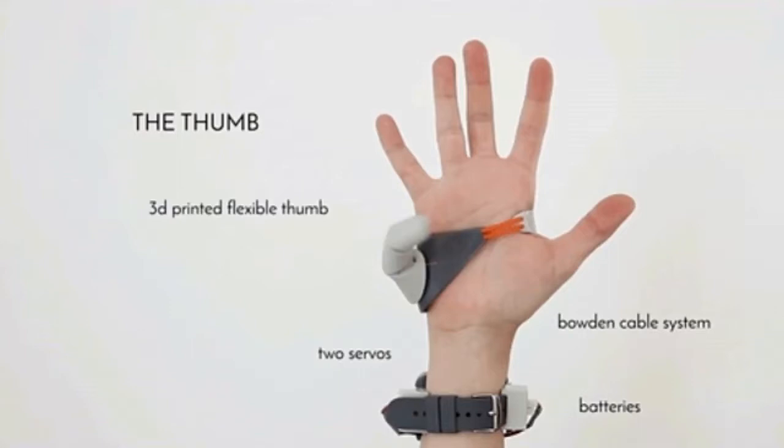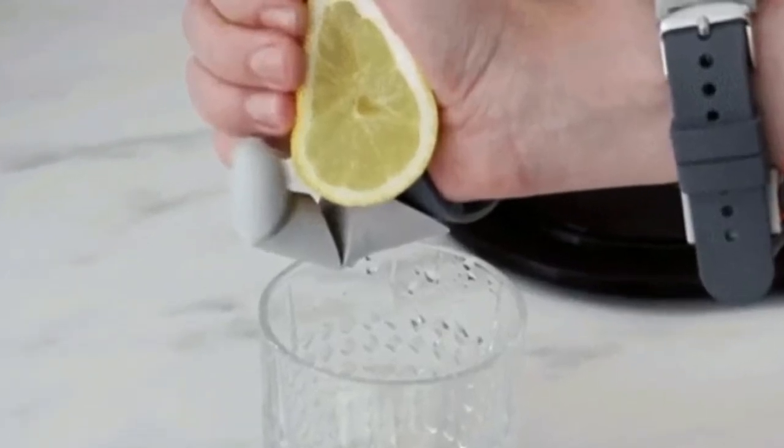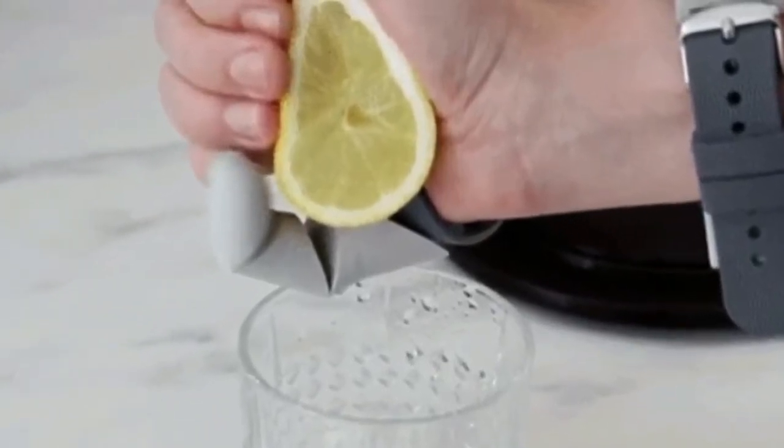The origin of the word prosthesis meant to add, put on to, so not to fix or replace, but to extend. Claude said to Dezeen, the third thumb is inspired by this word origin, exploring human augmentation and aiming to reframe prosthetics as extensions of the body.